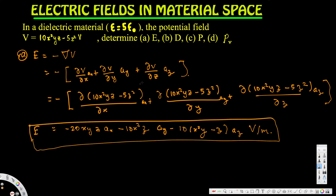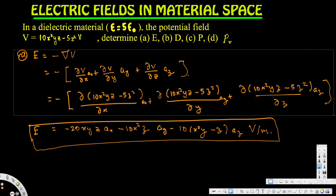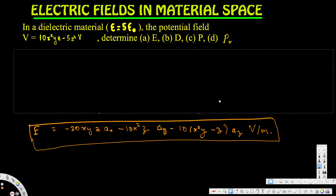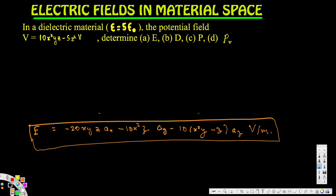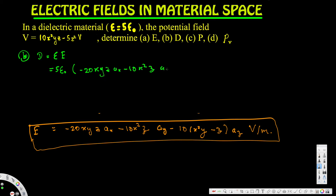Now let's go ahead and do the next question. The next question asks us to find D. To find D, we use the equation D equals epsilon times E. We know that epsilon equals 5 epsilon naught, so D equals 5 epsilon naught times E. Using the E we calculated, that's negative 20xyz ax minus 10x²z ay minus (10x²y minus z) az.